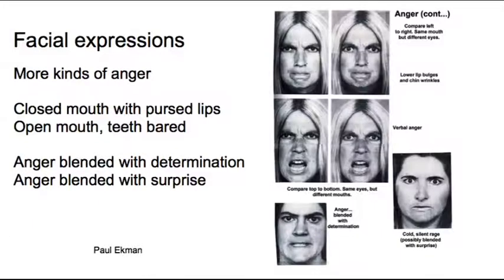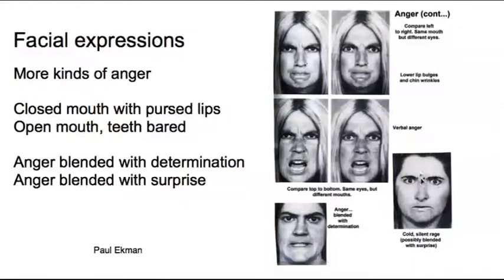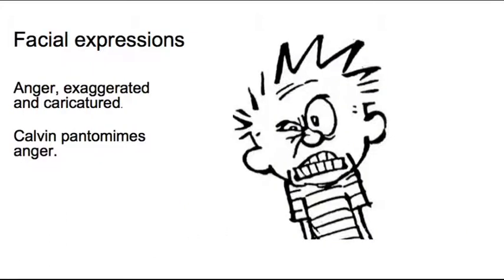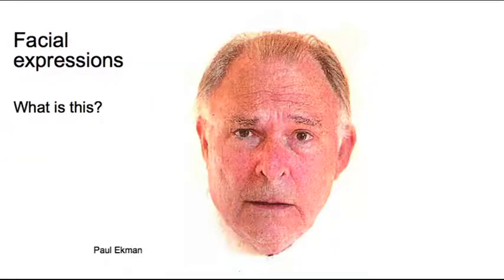Here are more variations on anger: a really nice one with the lower lip, anger shouting, a kind of cold silent rage with eyes very wide combined with brows pressed down, and lips pursed together as if the character can't even speak they're so angry. And here's more anger from Calvin — kind of pantomime anger.